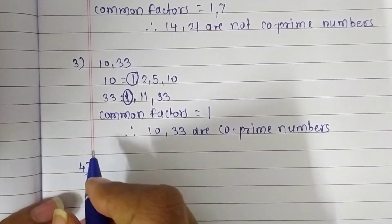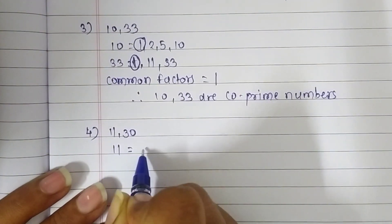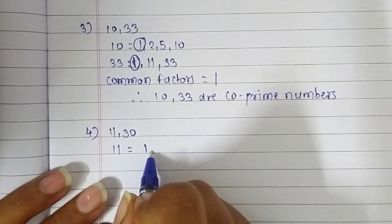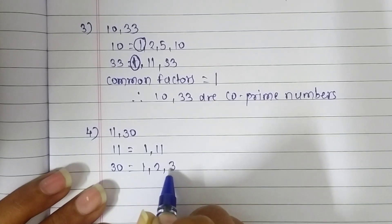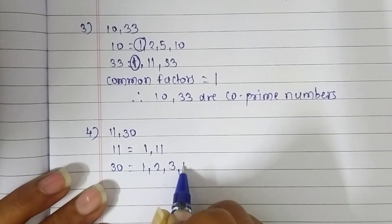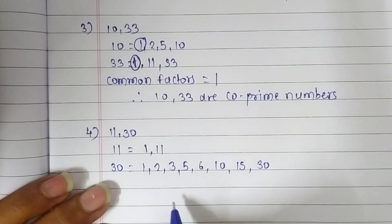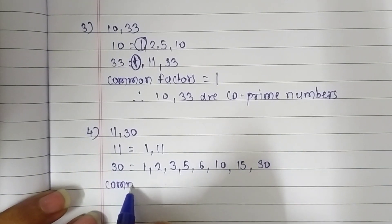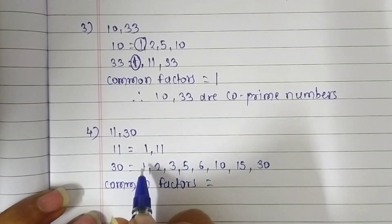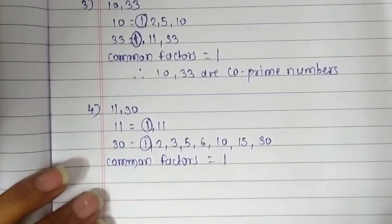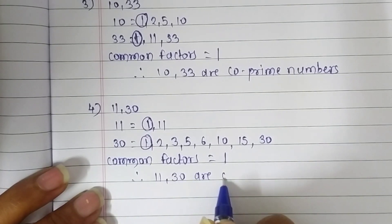Fourth question: 11 and 30. The factors of 11 are 1 and 11, because 11 is a prime number. The factors of 30 are 1, 2, 3, 5, 6, 10, 15, and 30. Finding the common factors, we get only 1. So 11 and 30 are co-prime numbers.